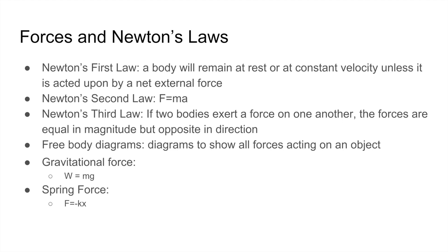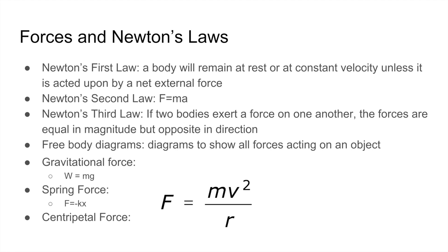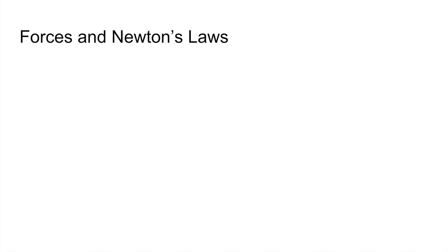The negative sign in F = −kx shows it's a restoring force — the further you pull a spring in one direction, the harder it pulls back in the other. The last important force is the centripetal force: F = mv²/r. If you're traveling around a circle of radius r at velocity v, the force needed to keep you moving in that circle is mv²/r.